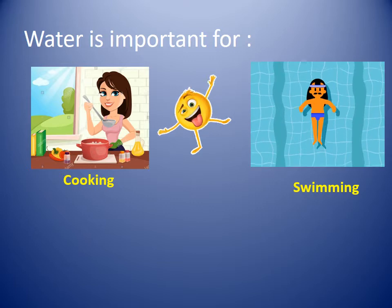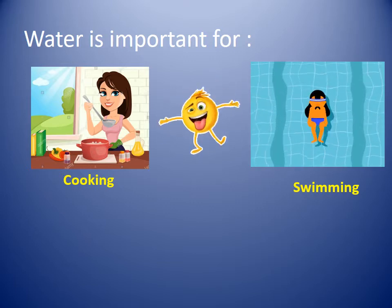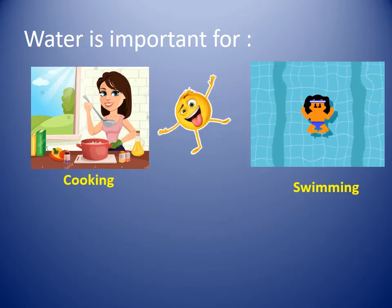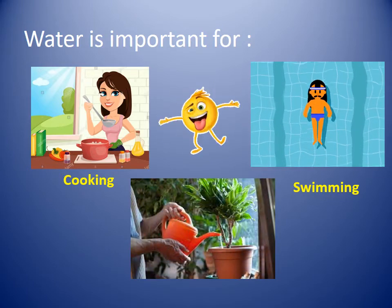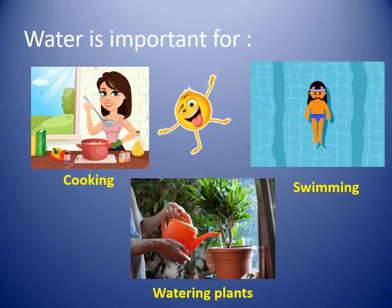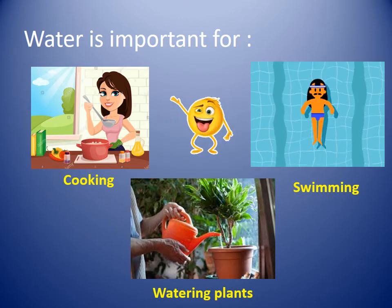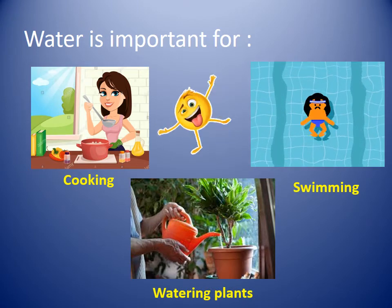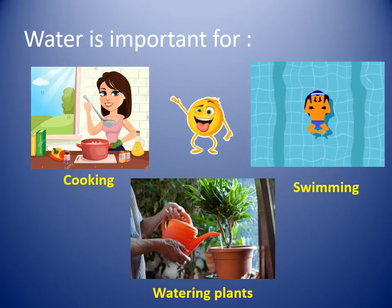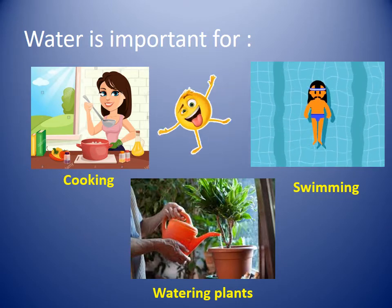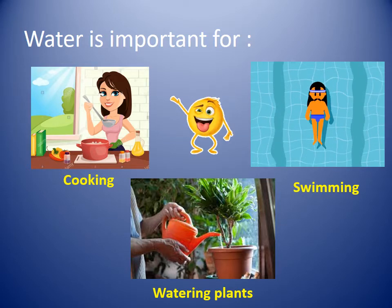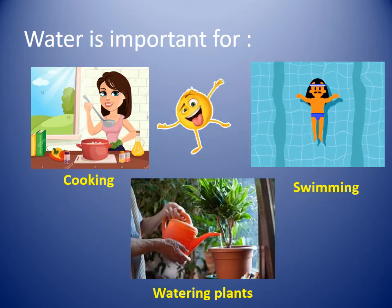Water is important for swimming. When we go to the sea in the summer we want to swim, so water is important for swimming. Also, water is important for watering the plants so the plant can stay alive. So water is important for drinking, cooking, bathing, swimming, washing, and watering plants.